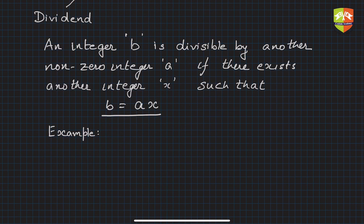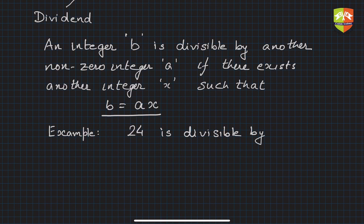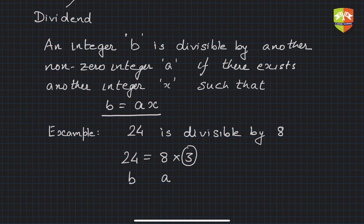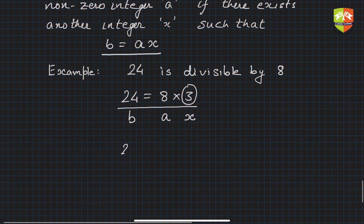As an example: 24 is divisible by 8, because 24 can be expressed as 8 times 3. So here 24 is b, 8 is a, and x is 3. We did find an integer x, and multiplying a by x gives us 24.